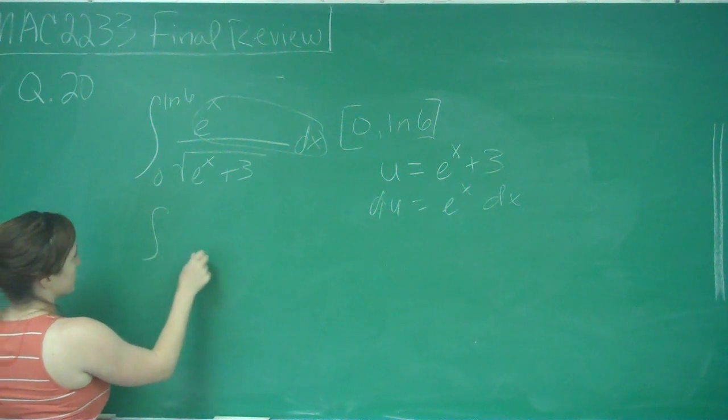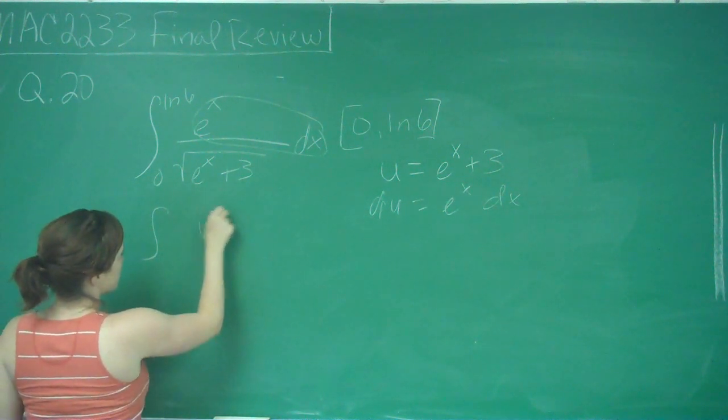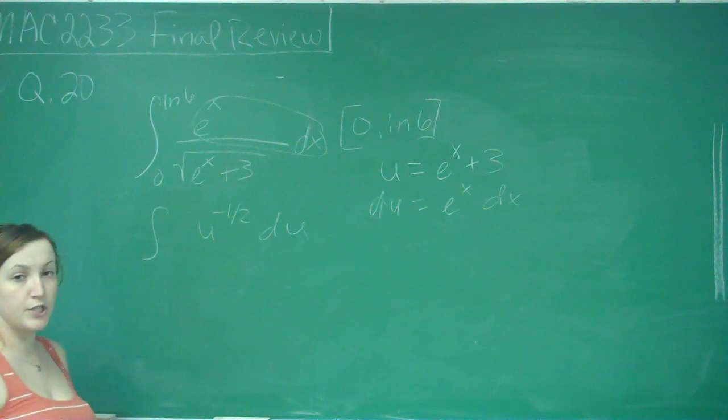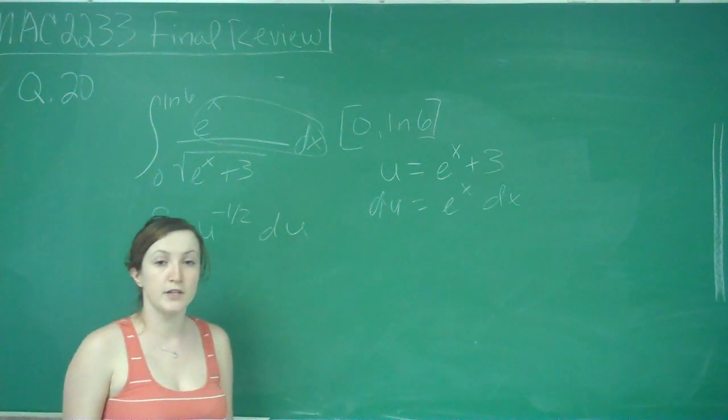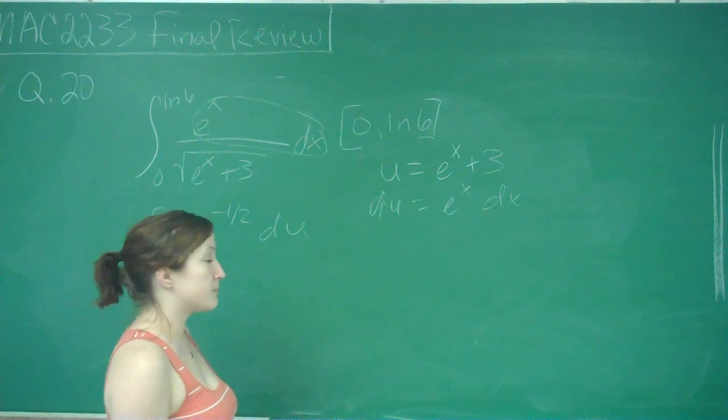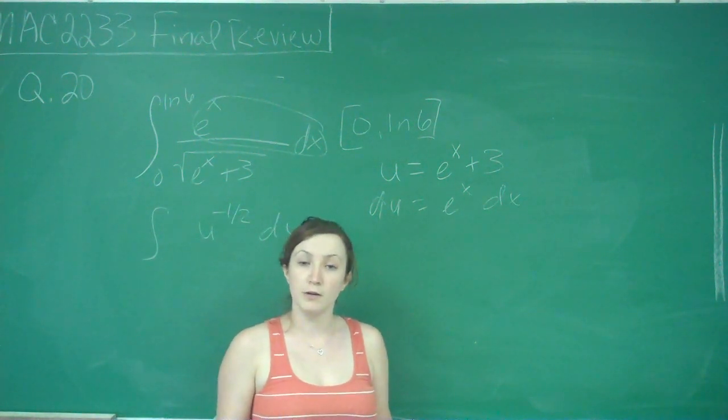And so then your integral is going to be u to the negative 1 half du. And I always like to go ahead and change my bounds. There's two ways to go about it. You can either change your bounds at the very beginning when you make your new substitution, which is what I like to do.